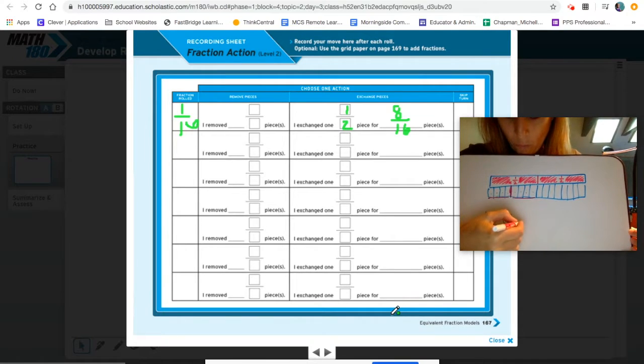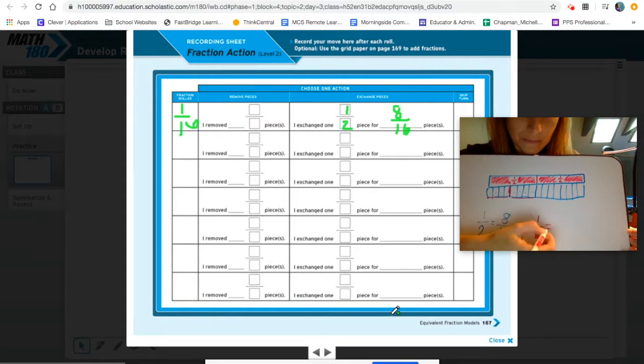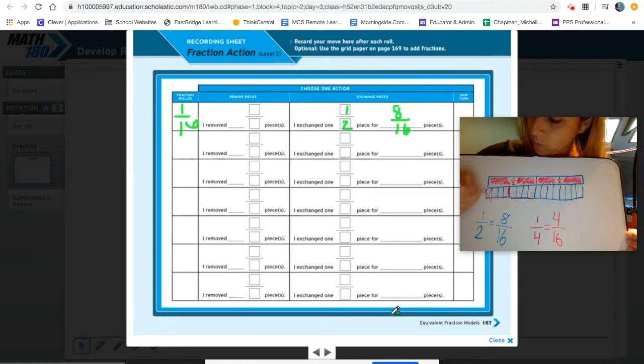So four sixteenths, one fourth is equivalent to four sixteenths. And I can now take on this turn those four sixteenths out because I removed one fourth or the equivalent, which is four sixteenths.